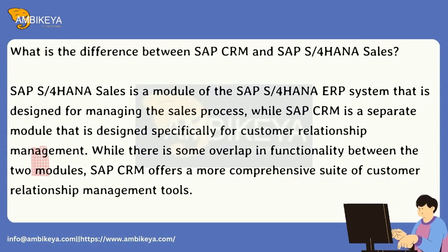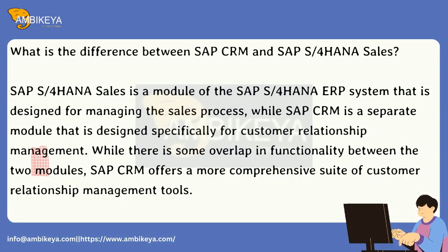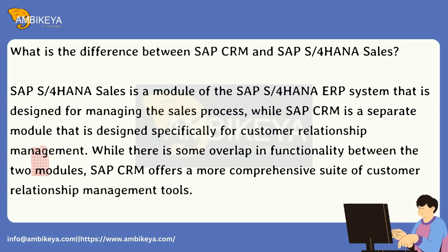What is the difference between SAP CRM and SAP S/4HANA Sales? SAP S/4HANA Sales is a module of the SAP S/4HANA ERP system designed for managing the sales process, while SAP CRM is a separate module designed specifically for customer relationship management. While there is some overlap in functionality, SAP CRM offers a more comprehensive suite of customer relationship management tools.